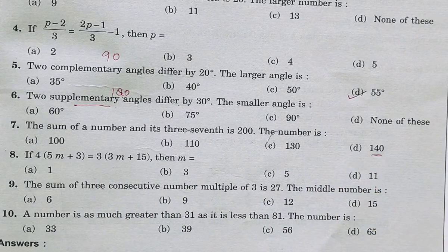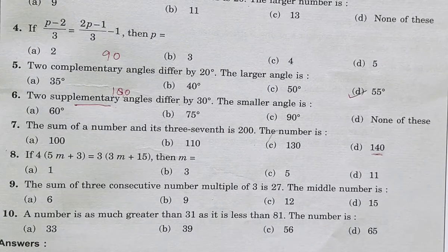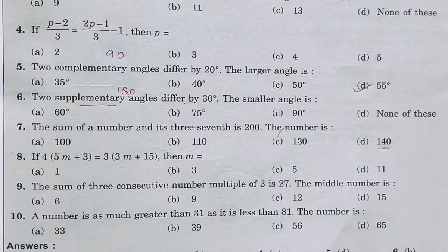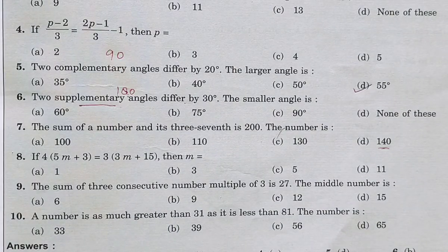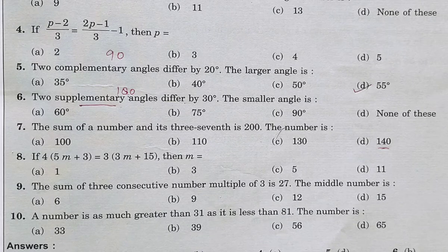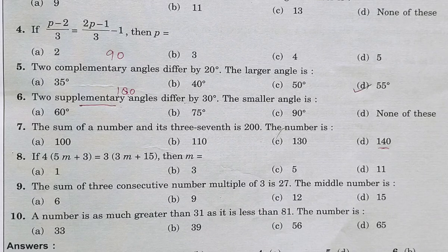Questions 8, 9, and 10 are your assignment work — you have to solve these three questions. So students, that's all for today. We will meet in the next video with a new chapter: Ratio and Proportion. Collect all your doubts from this chapter and we will discuss them in the evening doubt class, then proceed to the next chapter. Complete your assignment work and keep preparing your notebook. Thank you, students.